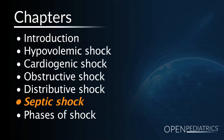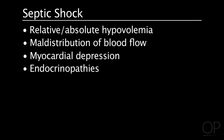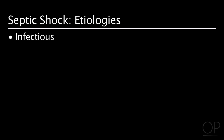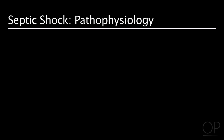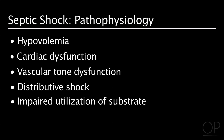Last but not least is septic shock, which includes many of the problems seen in other types of shock: relative and absolute hypovolemia, maldistribution of blood flow, myocardial depression, and a variety of electrolyte and endocrinopathies. The majority of etiologies are infectious. The pathophysiology includes hypovolemia, cardiac dysfunction, vascular tone dysfunction and distributive shock, and at a cellular level, impaired utilization of substrates.